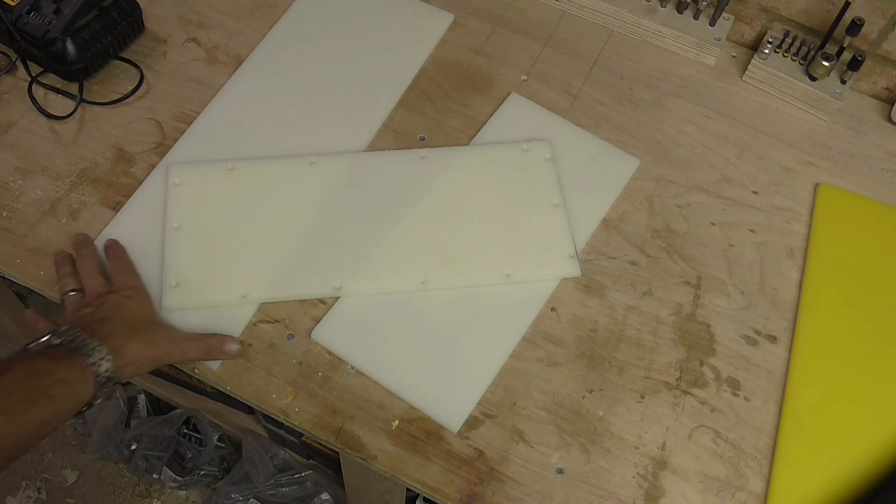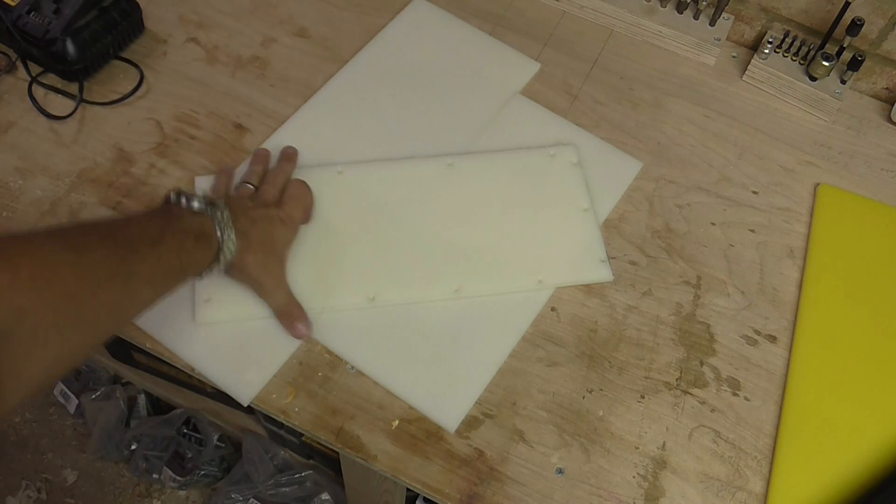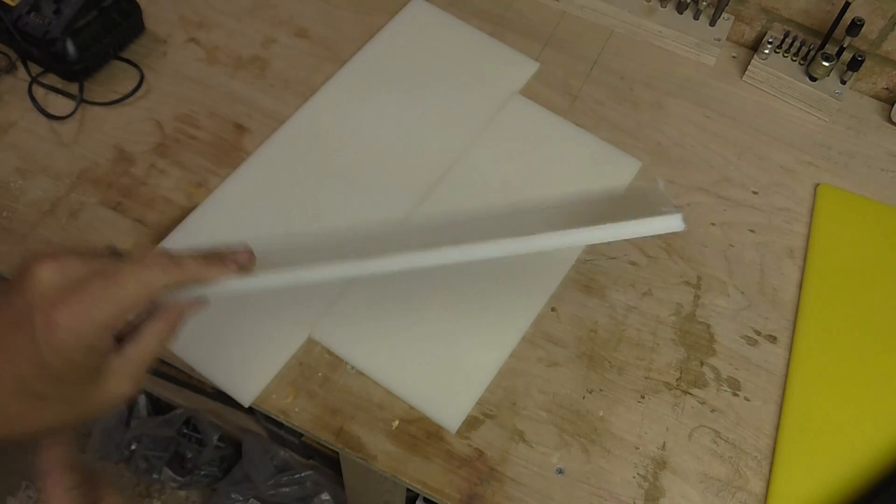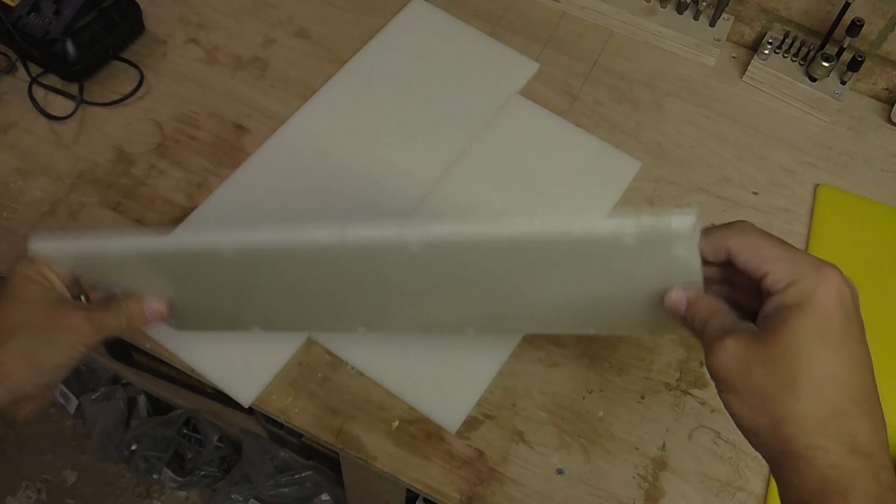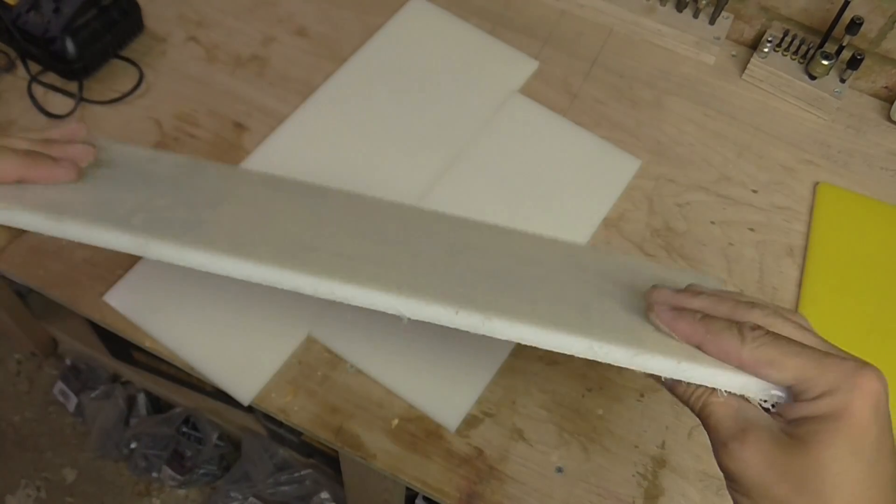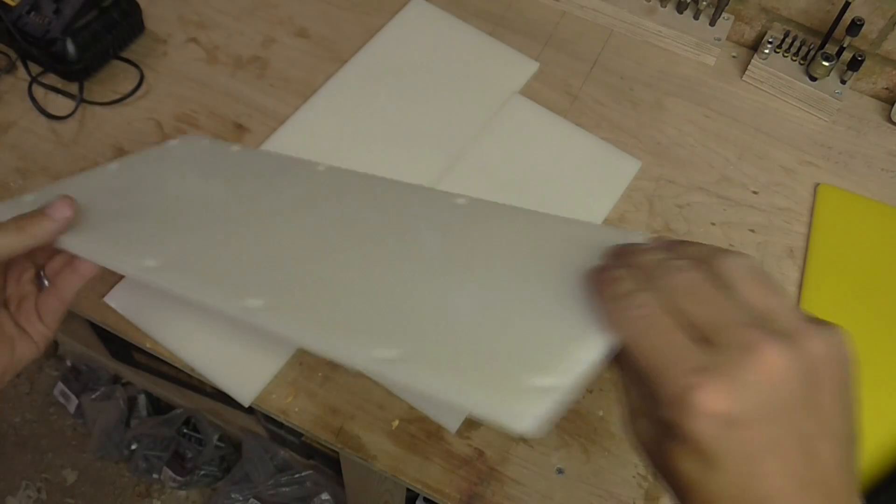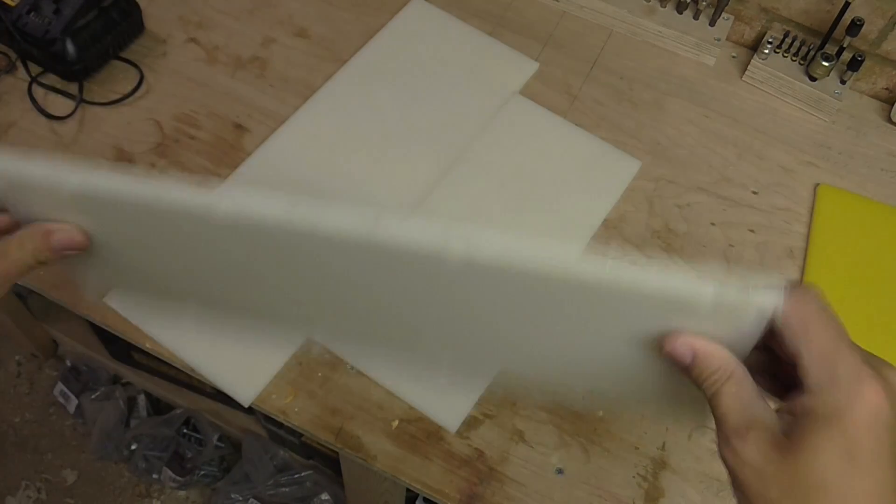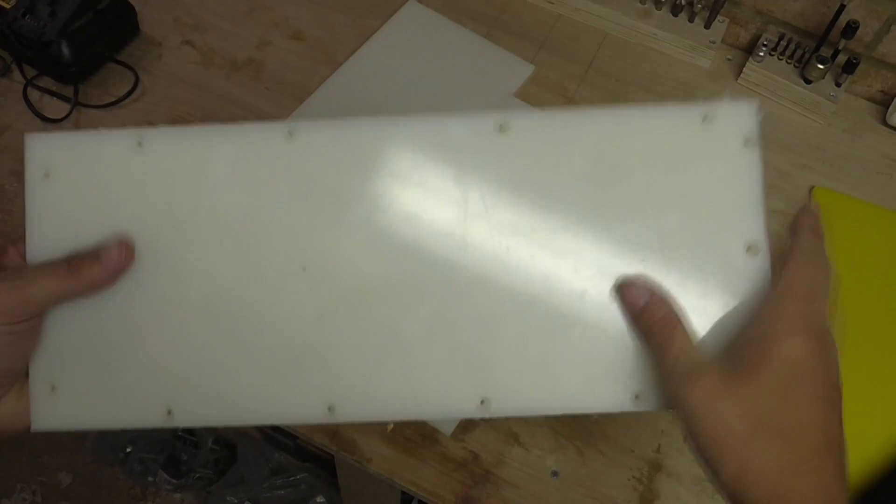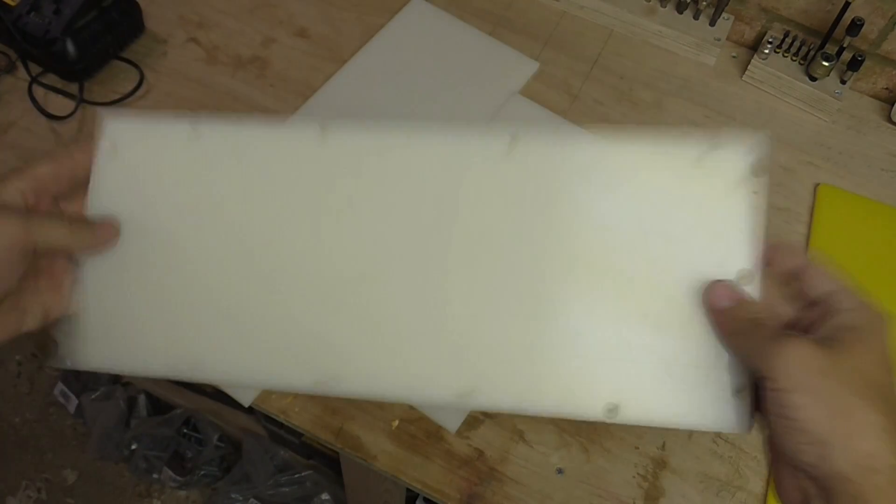For the blast gates themselves I'm going to use this 8mm high density polyethylene that I had for another project. You can get it on eBay, nice and rigid and it also cuts and drills and routes really easily, it's really nice to work with. It's got quite a glossy finish so I'm hoping it will slide quite well for the actual blast gates themselves.